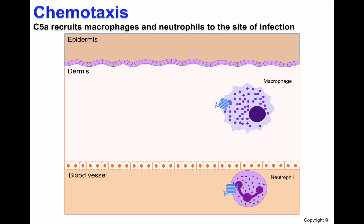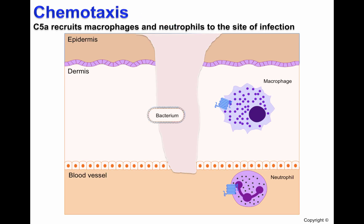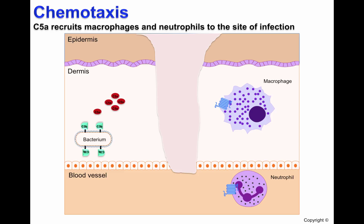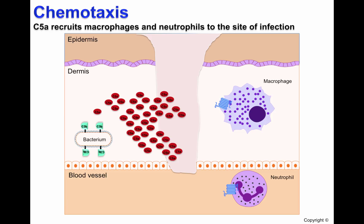In the case of an injury, a pathogen can infect the host. Upon entering the host, complement activation will occur, leading to the formation of C5A. A C5A concentration gradient will then be created, with higher concentration of C5A near the pathogen and lower concentration further away.